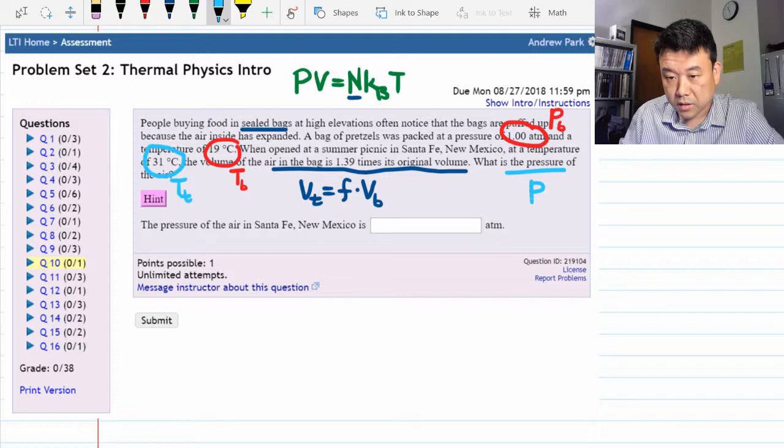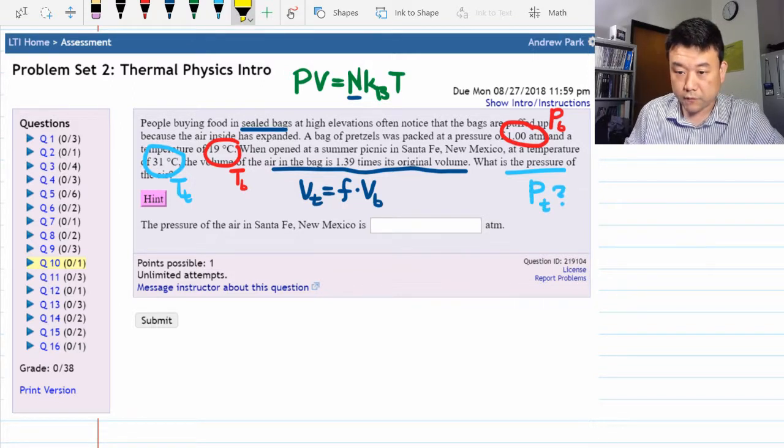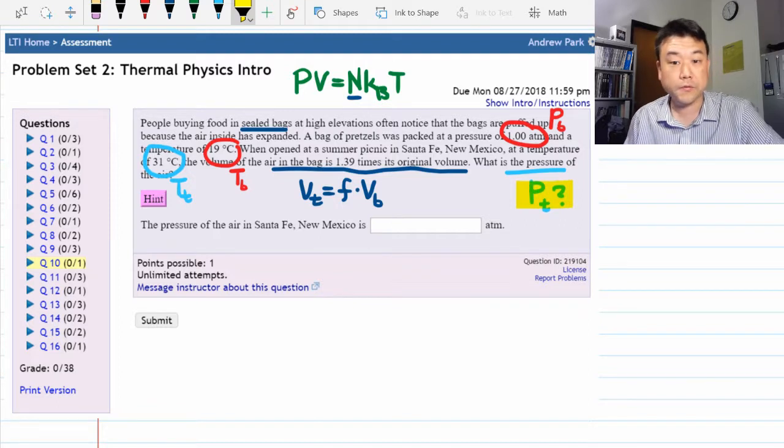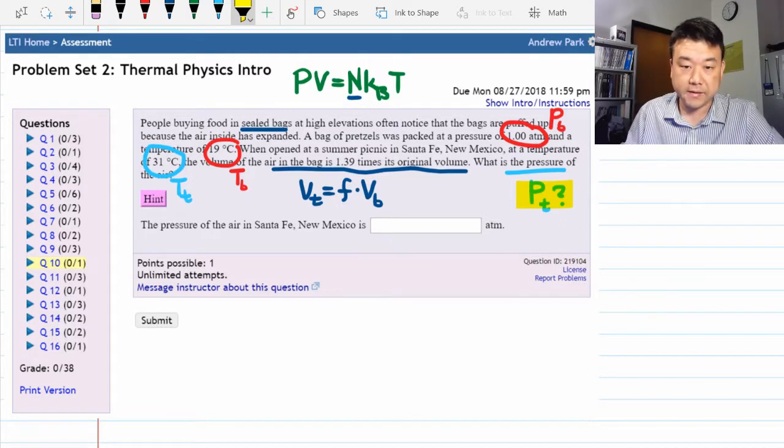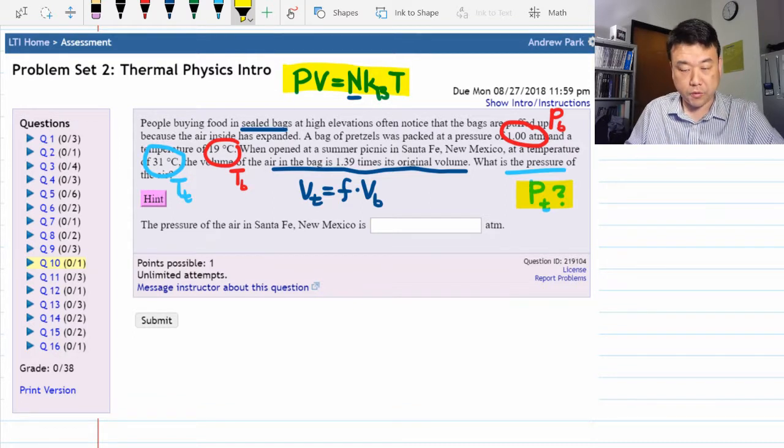Now it's asking what is the pressure of the air at the top. So it's a pretty straightforward question. You have one unknown that you are trying to solve for. And this ideal gas law is going to be your main tool.